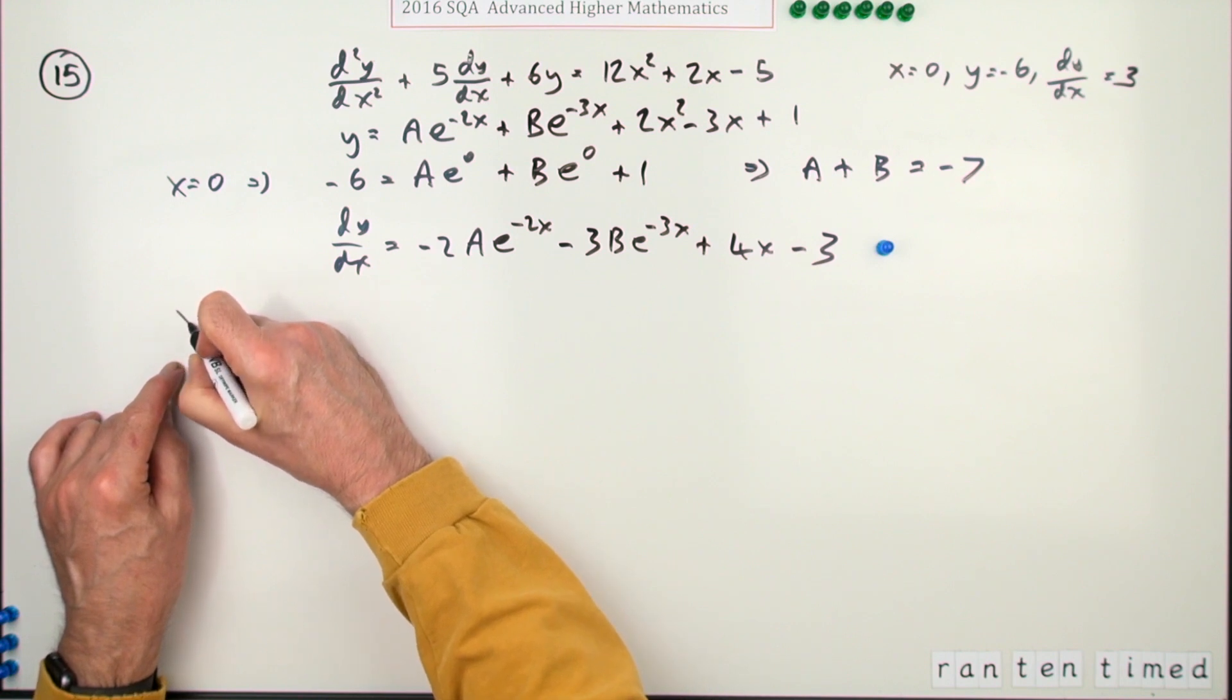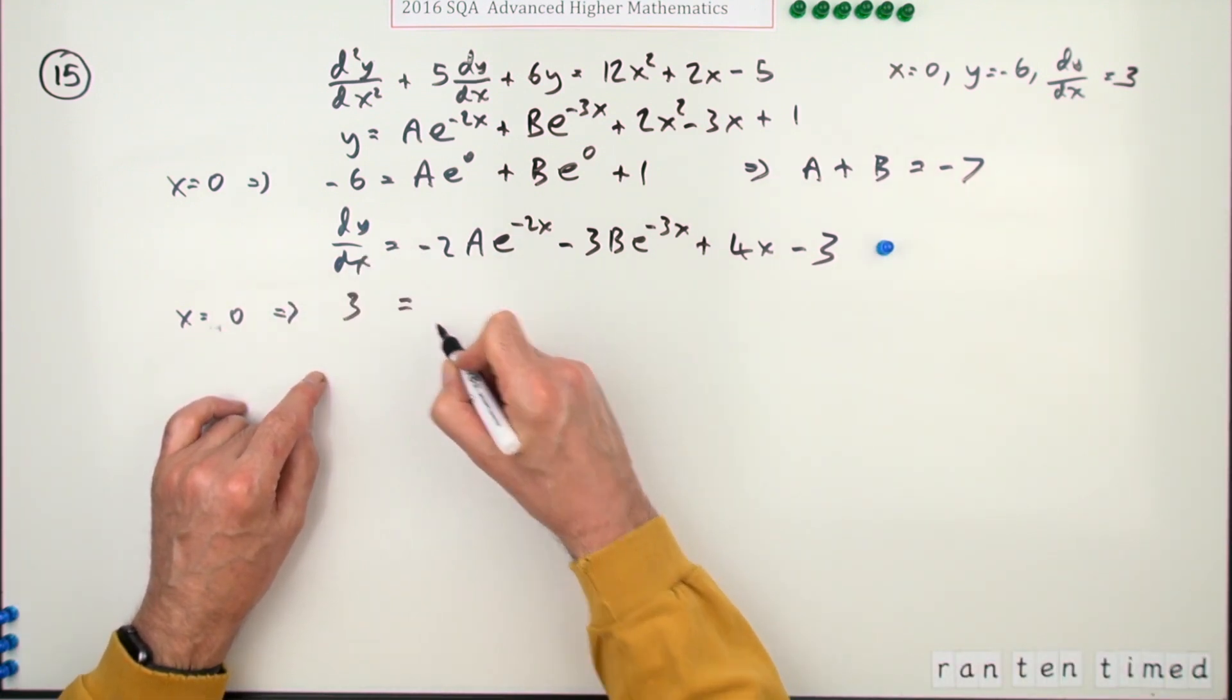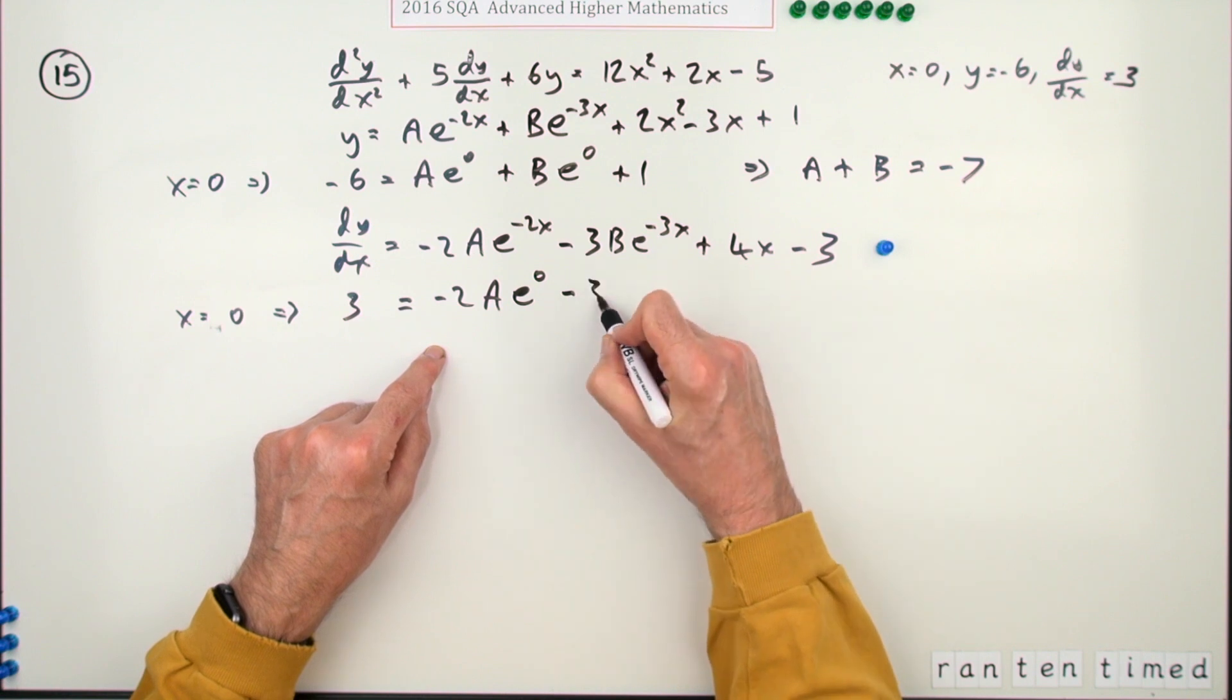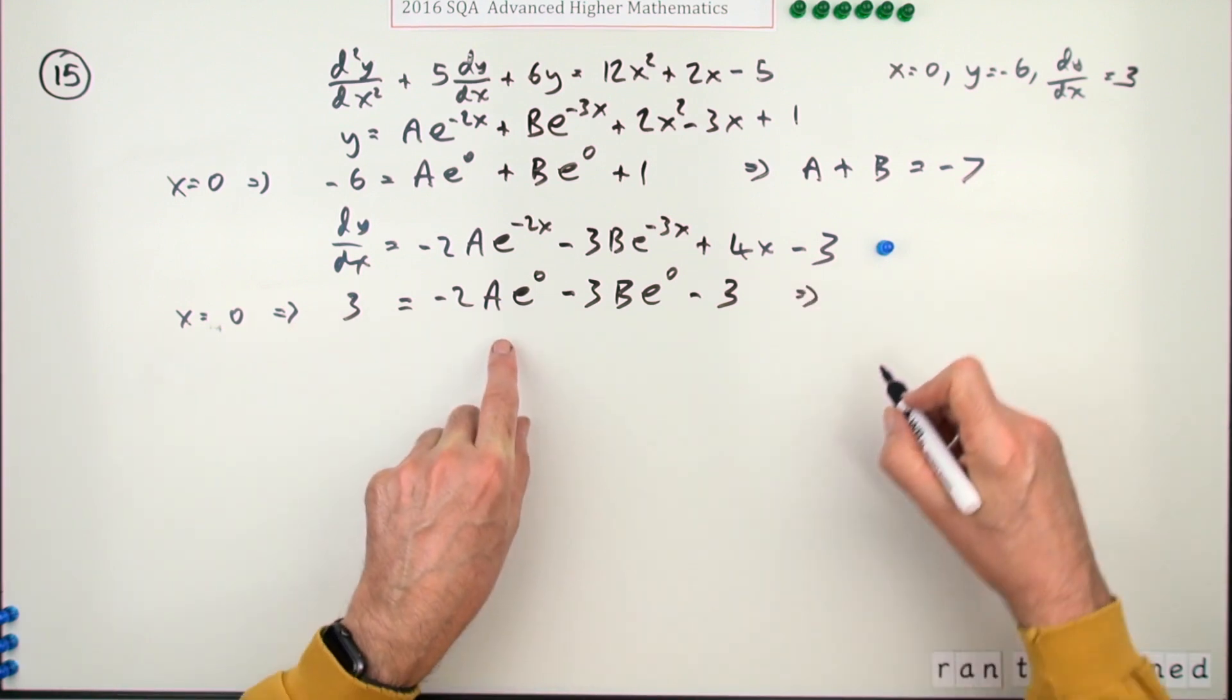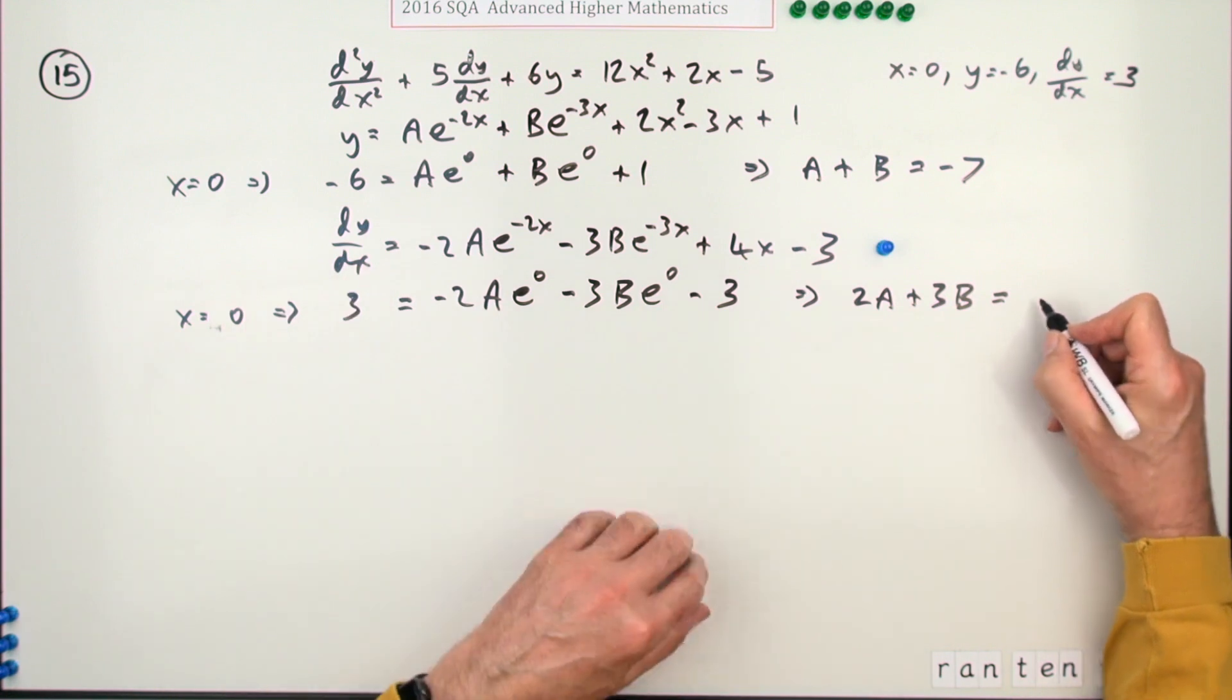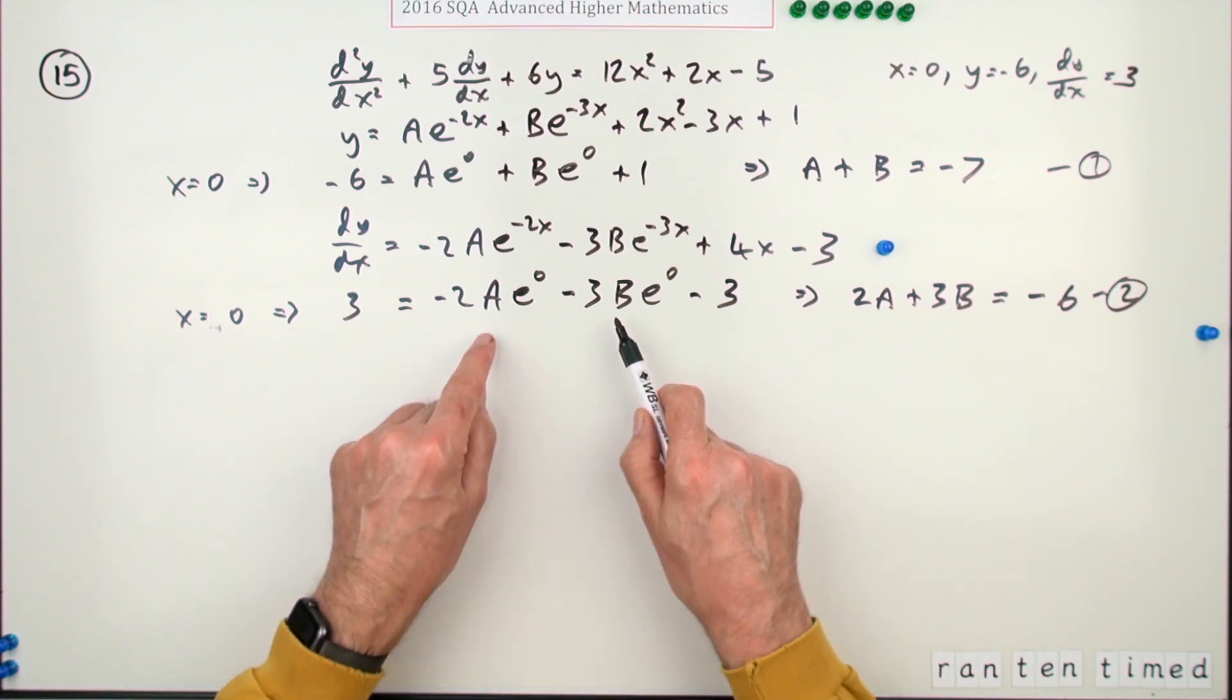Now putting the values in, x equals 0 means now dy/dx is 3, means you get 3 for dy/dx. So that'll be negative 2A, I'll just put e to the zero again instead of just 1, negative 3B e to the zero, that's zero, of course that's minus 3. Which means I've got this equation. Now I'll just take them over there so I'll have positives here: 2A plus 3B equals, and bringing that over is negative 6. Now you get the second mark for forming this pair here, this pair of equations in A and B.